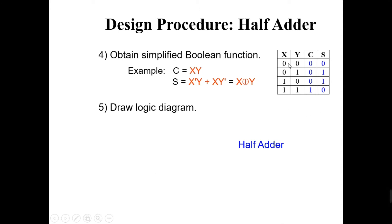This is the truth table for a simple half adder circuit. As you can see, there are only two inputs, so there will be four sets of rows. The combinations are: zero-zero, zero-one, one-zero, and one-one. For the first row, we are adding zero with zero, so it produces a total result of zero — sum is zero and carry is also zero.